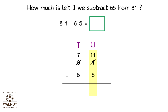Now, we can subtract. We can subtract the units and then we subtract the tens. That gives us the final answer. So, 81 minus 65 is equal to 16.